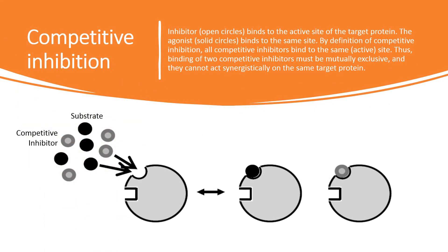Similar to the above-mentioned scenario, synergy may be observed where two drugs that only act on one target protein can show synergism. In such a case, we can study the interaction of the drugs mechanistically, and determine why and how several drugs can reinforce each other, or why they do not. Let us assume a simple enzyme following the laws of mass action and Michaelis-Menten kinetics. In the simplest case, this enzyme has an active site where substrate is being converted into product, and possesses one or several specific binding sites for inhibitors.